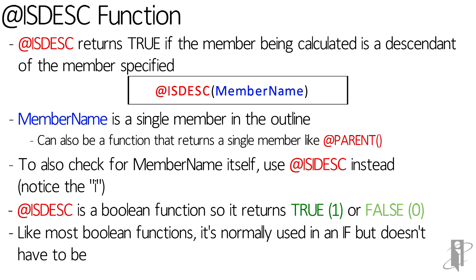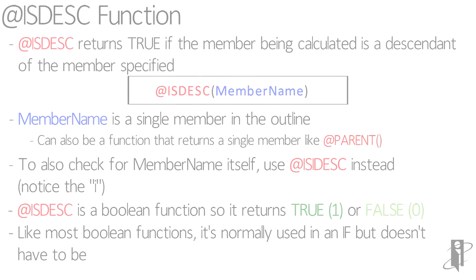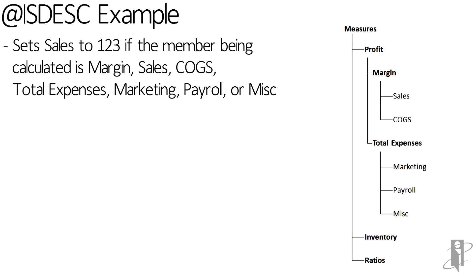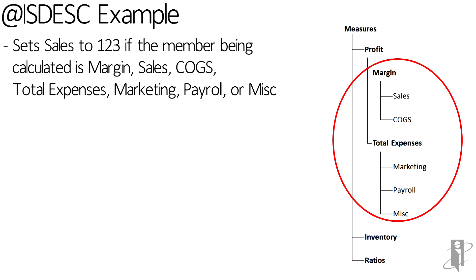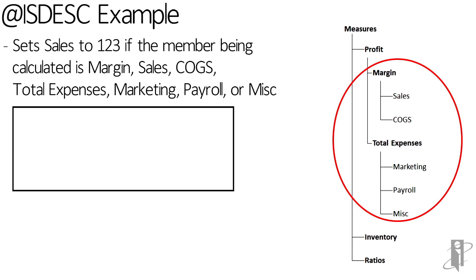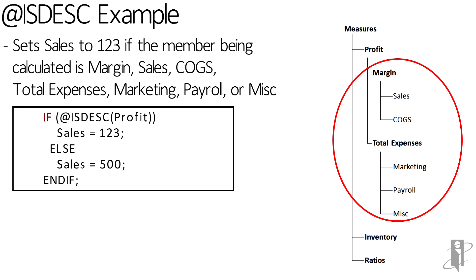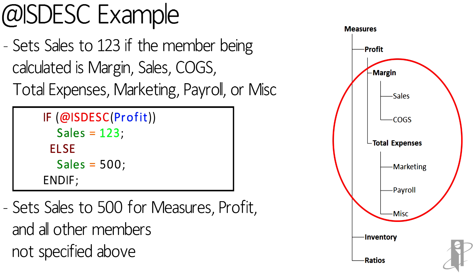Because it's a boolean function, it's quite common to use it inside of an IF. For example, if I want to set sales equal to 123 when the member being calculated is something beneath profit in the outline — meaning margin, margin's children, total expenses, or total expenses' children — I don't have to hard code all those names. I can just say: IF IS descendant profit, set sales equal to 123, otherwise set sales equal to 500.